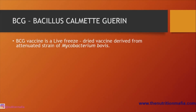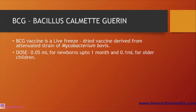How is BCG prepared, and what are the doses and route? BCG vaccine is a live freeze-dried vaccine derived from the attenuated strain of Mycobacterium bovis. The dose is 0.05 ml for newborns up to one month of age, and 0.1 ml for older children up to one year of age.